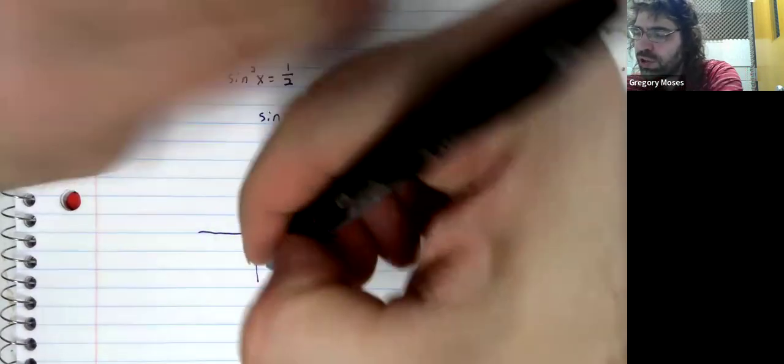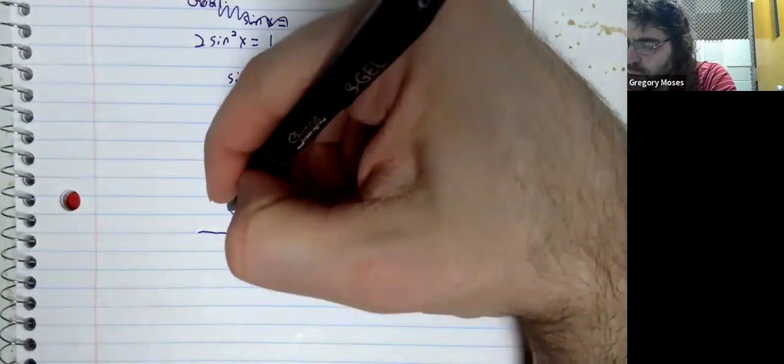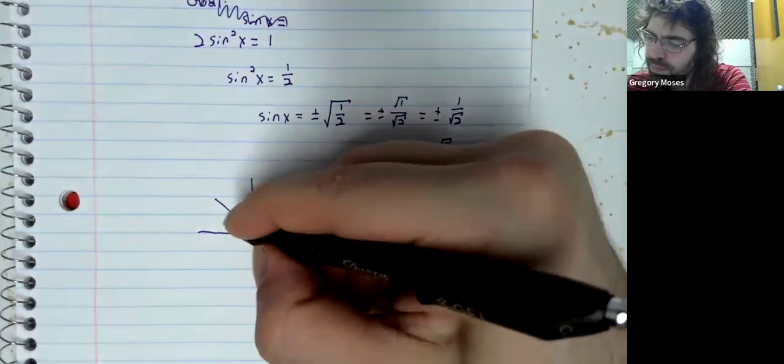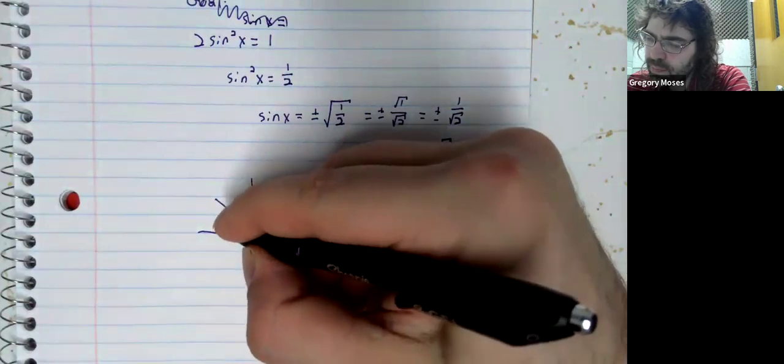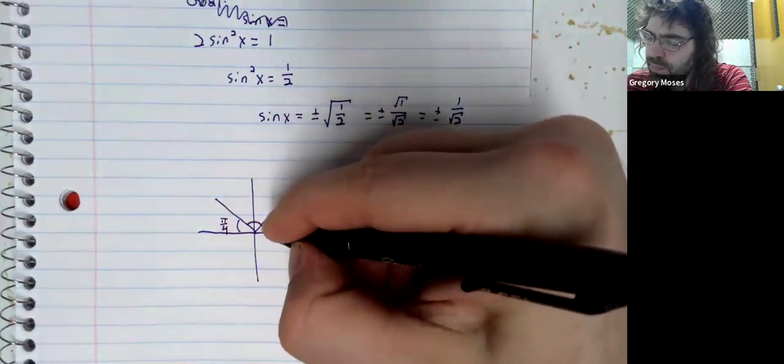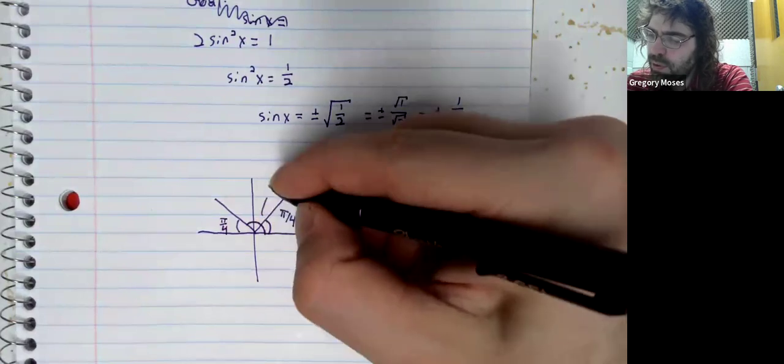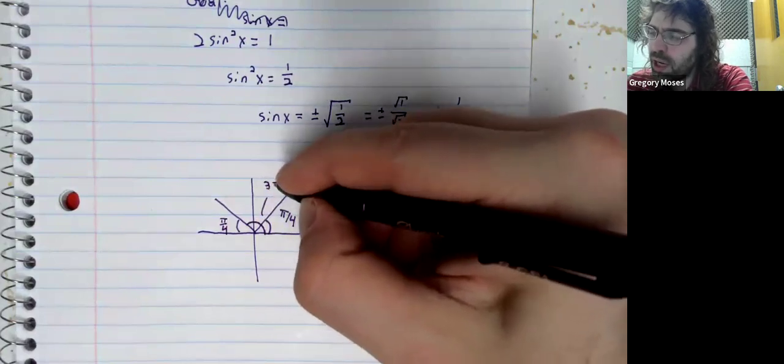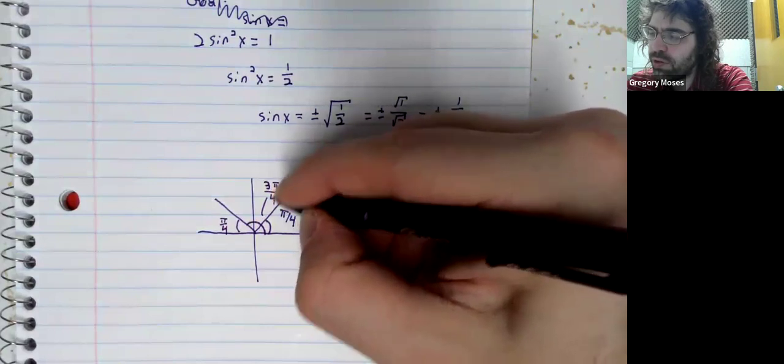If we use reference angles, we get 3 pi over 4.